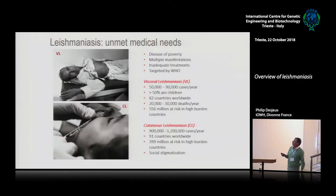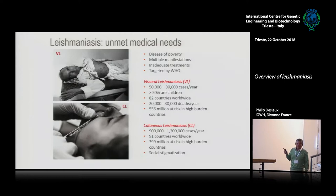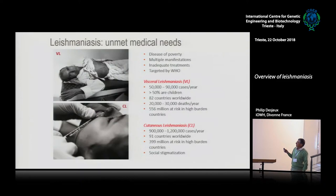Some years ago, we used to say we have between 50,000 and 90,000 cases per year of visceral Leishmaniasis. That's no longer true — we have less now. An important point: more than 50% of cases are still in children. That's the importance of targeting children in treatment.